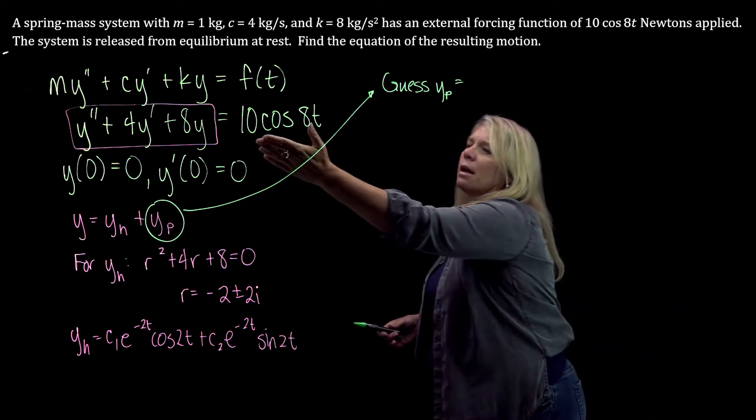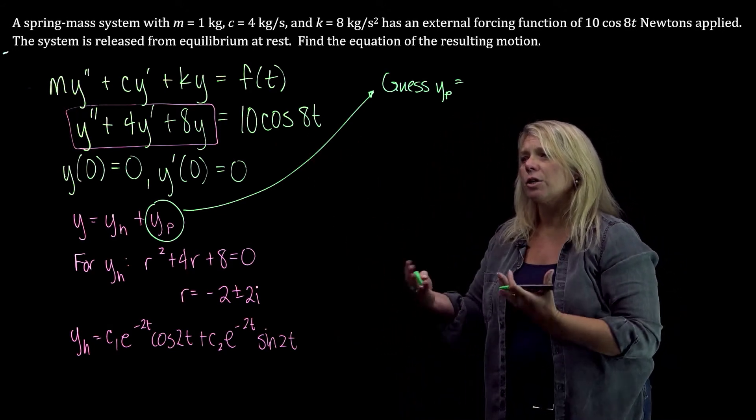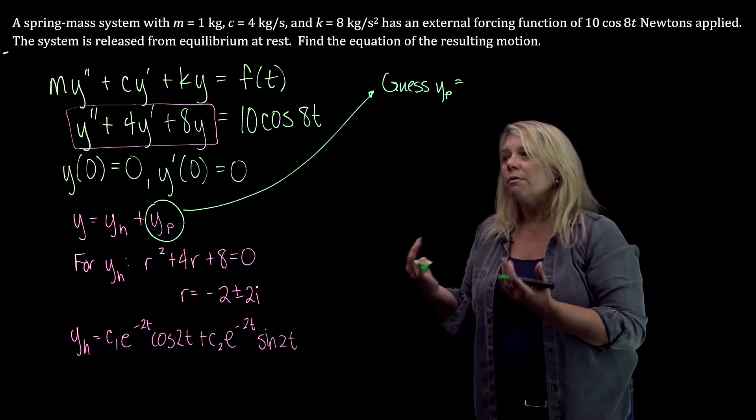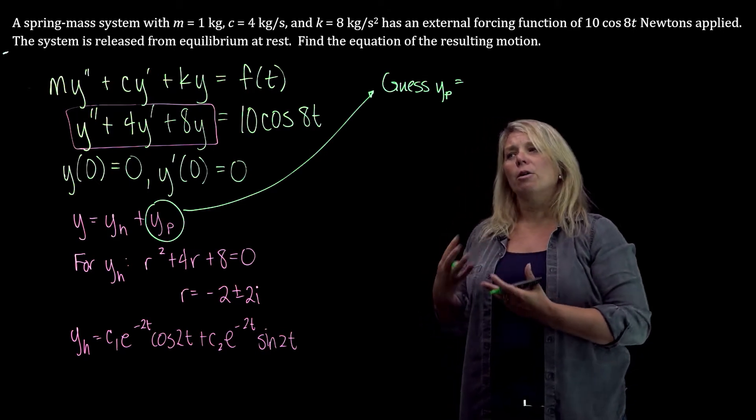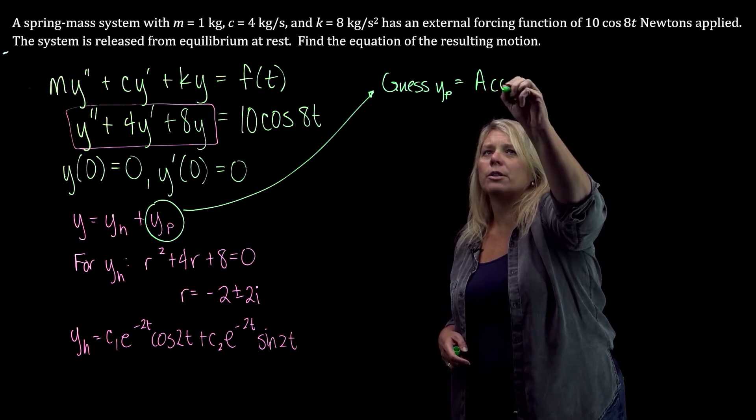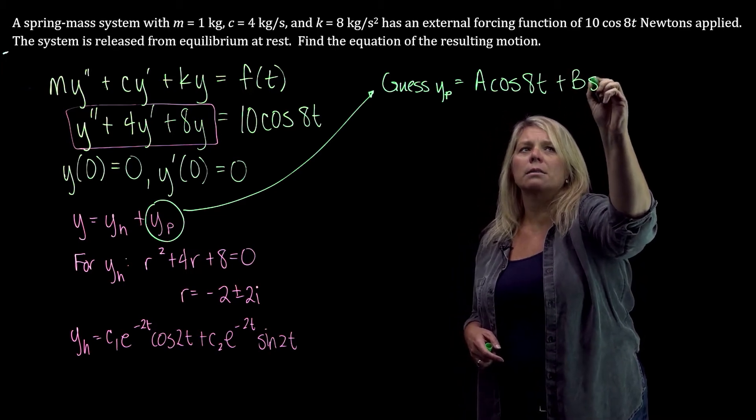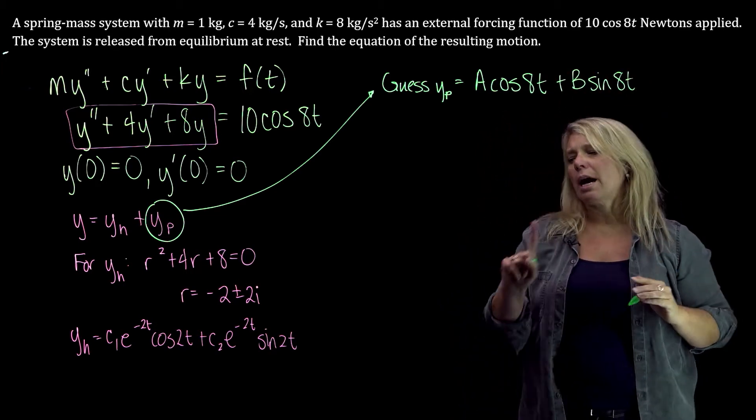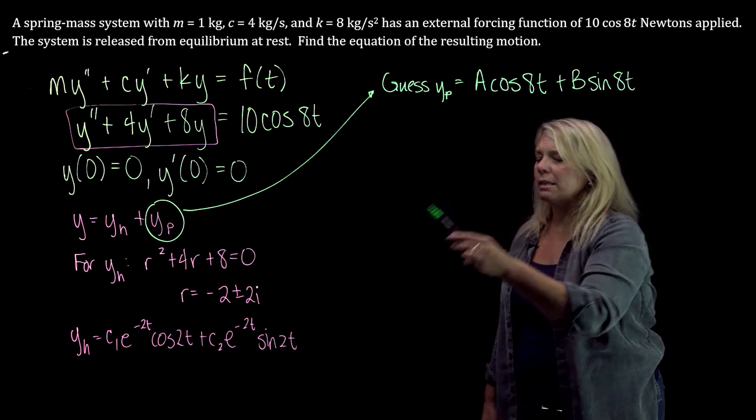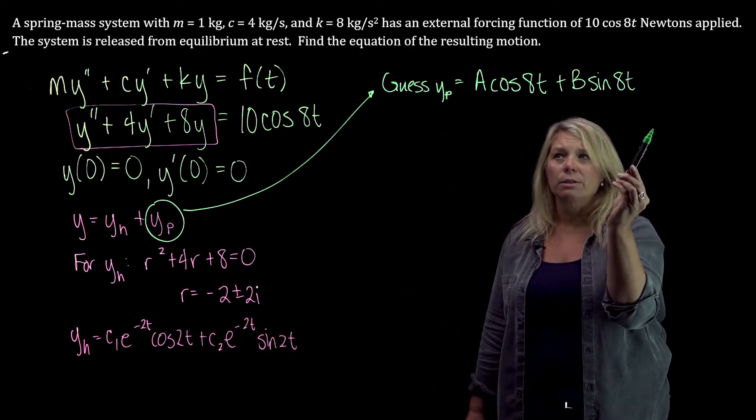We're going to make our guess based on the form of the right-hand side of this differential equation. So we think about the function cosine of 8t and all of its derivatives, which are different scalar multiples of cosine of 8t and sine of 8t. So our guess, this is undetermined coefficient, a cosine of 8t plus b sine of 8t. We should double-check to make sure that nothing in our particular solution, none of these functions here in this guess show up here in the solution for the homogeneous. So I don't need to make any modifications to my guess here.